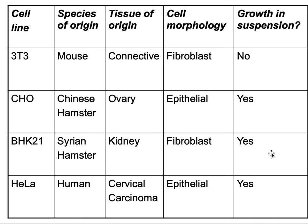Some examples of cell lines: 3T3 is a mouse cell line generated from connective tissue with fibroblast morphology, and it is an adherent cell line. CHO is derived from hamster — the original tissue is ovary, the cell morphology is epithelial, and it is an adherent cell line. BHK-21 is also derived from hamster, the source is kidney, the cell type is fibroblast, and it must be attached. HeLa is derived from human, the source is cervix, it is an epithelial cell line, and it also grows as an adherent cell line.